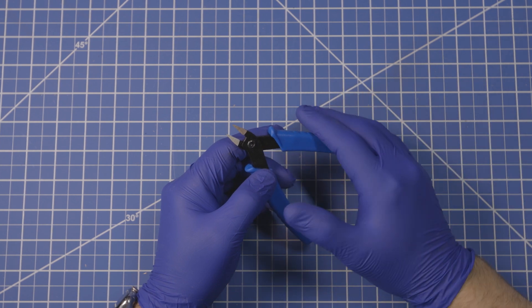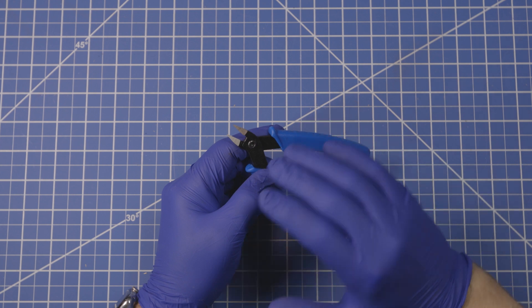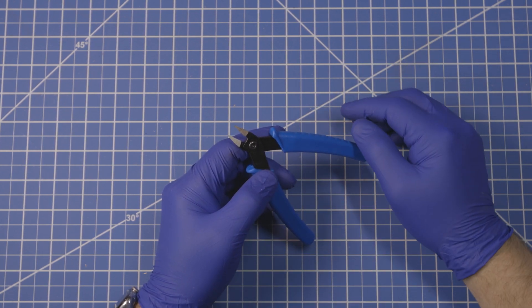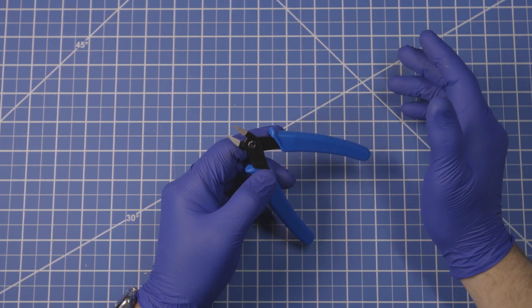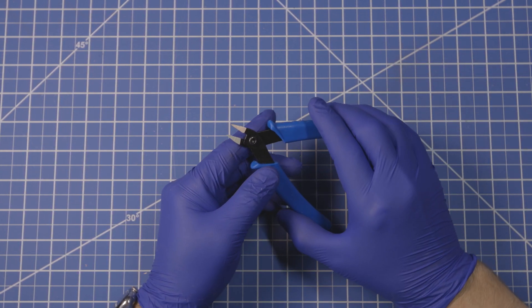I generally use these for zip ties so that zip ties don't have that horrible skin gouging knife edge that happens when you use diagonal cutters or other cutting methodologies that don't cut it flush. And I'll do a quick demo of that.